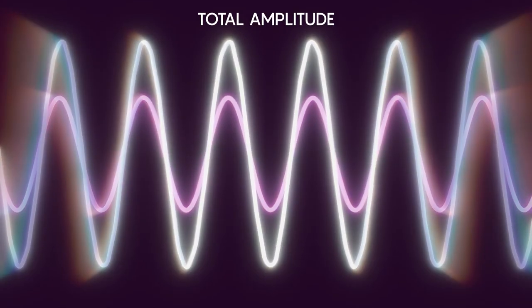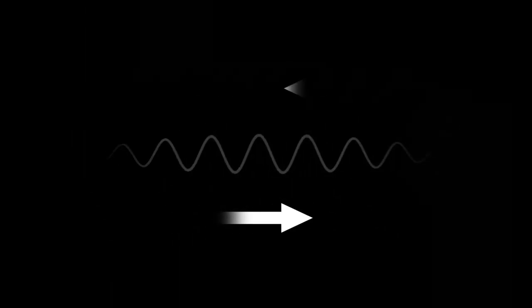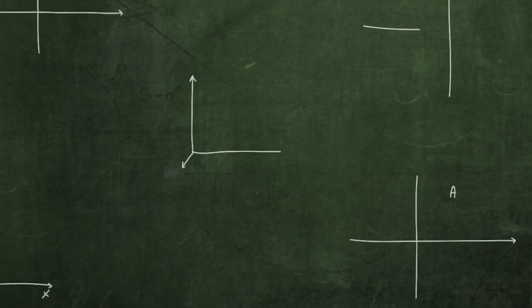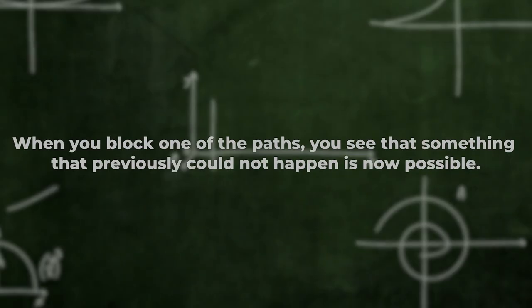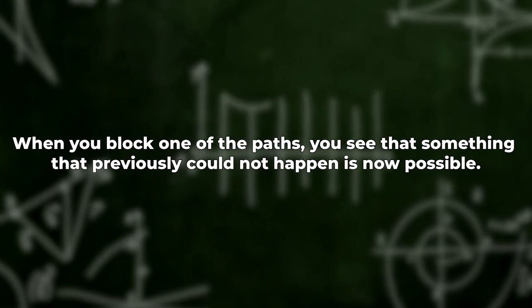The total amplitude for something to occur would be 0 if it could occur in one way with an amplitude of half and another way with an amplitude of minus half. You perform this in the well-known double-slit experiment. When you block one of the paths, you see that something that previously could not happen is now possible.